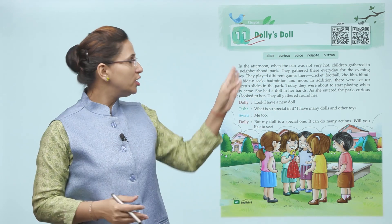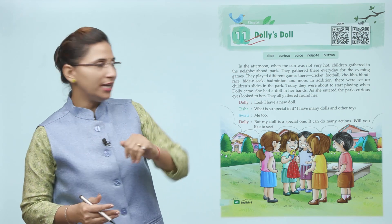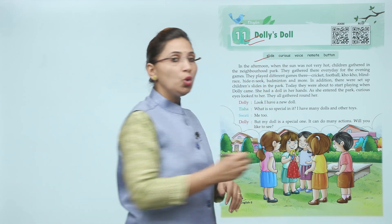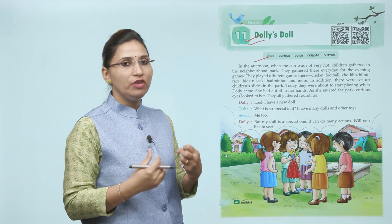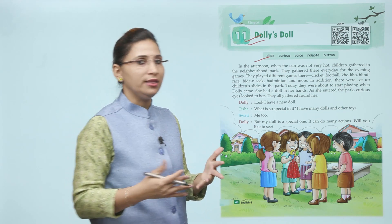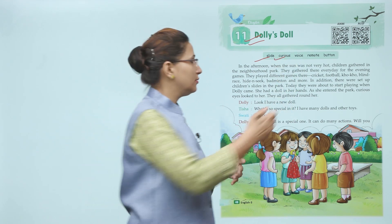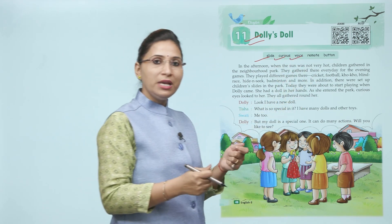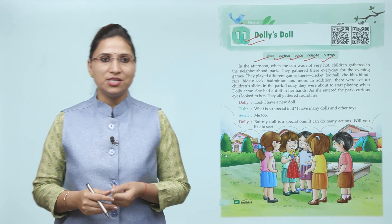So first we need to know some words and meanings. Slide means jo fislan hoti hai, slides milte hai. Curious kya hota hai? Kisi cheez ke liye usse kehna, kisi cheez ko lene ki wish karna — toh hum uske liye curious ho jate hain. Voice means awaaz. Remote means kisi cheez ko handle karna. And button — easily you know, button.